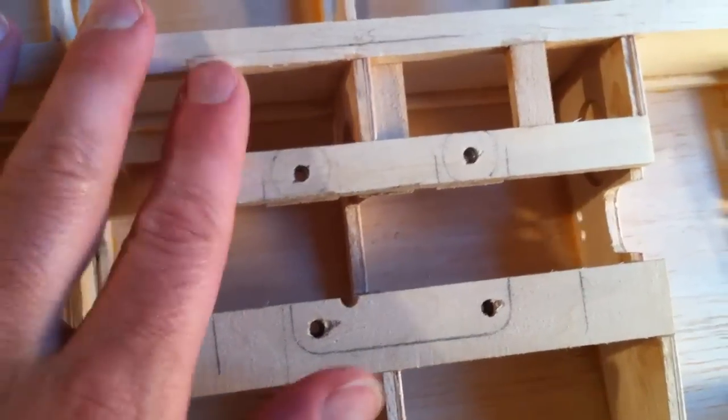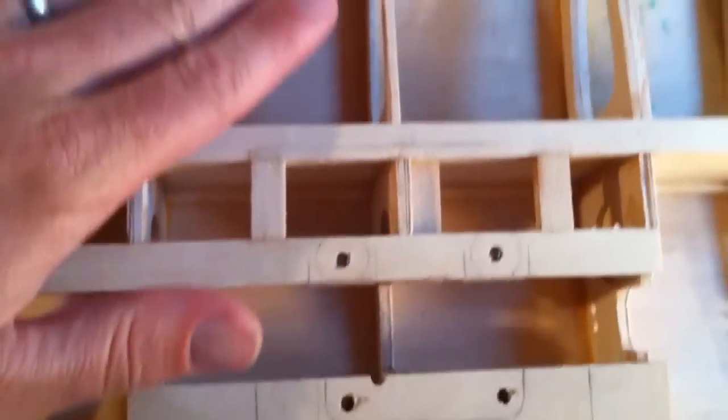But I think those two on each end will be fine and it will be flush with the balsa sheeting when that's put on.